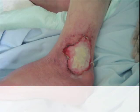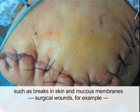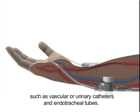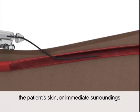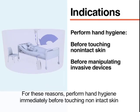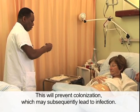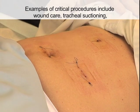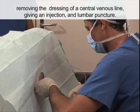There are body regions that must be kept as free of microorganisms as possible. These include zones of impaired host defense such as breaks in skin and mucous membranes, surgical wounds, or sites of invasive device insertion, such as vascular or urinary catheters and endotracheal tubes. Microorganisms that colonize the healthcare worker's hands, the patient's skin, or immediate surroundings must not be introduced into these zones of lowered immune protection. Therefore, perform hand hygiene immediately before touching non-intact skin and before manipulating invasive devices to prevent colonization that may subsequently lead to infection. Examples of critical procedures include wound care, tracheal suctioning, removing the dressing of a central venous line, giving an injection, and lumbar puncture.